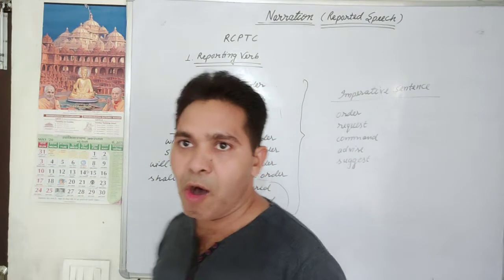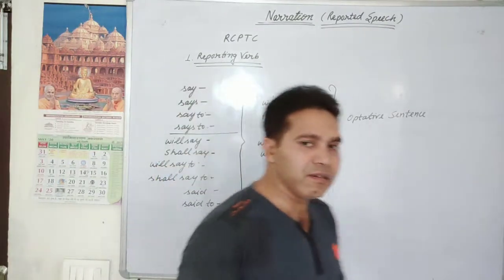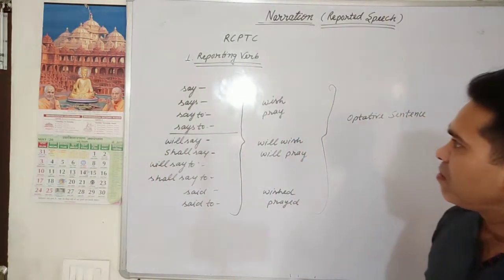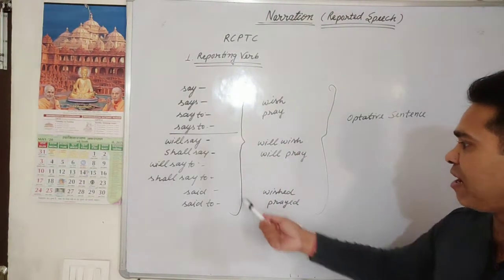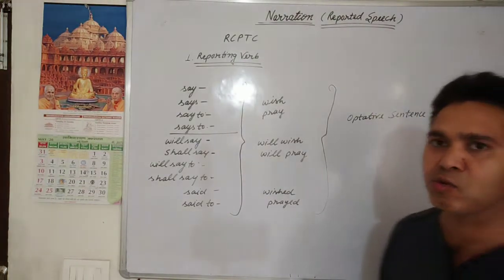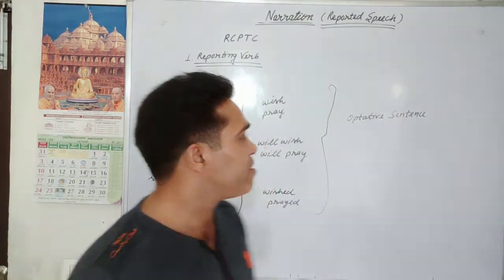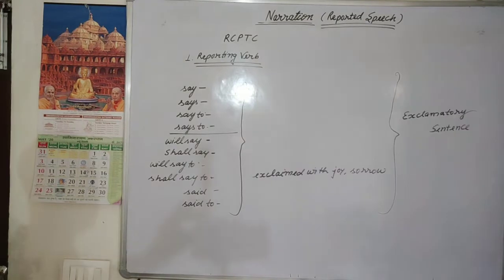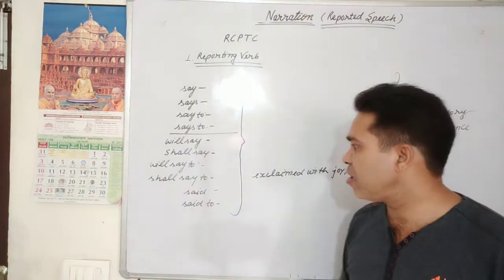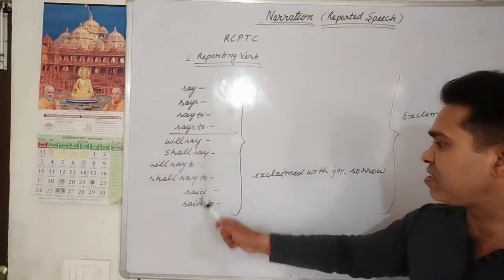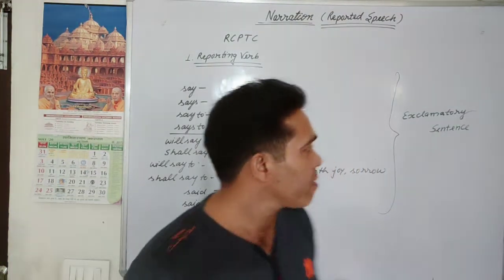If the sentence is optative, we change the reporting verb to 'wish' or 'pray', 'will wish', or 'will pray'. In past tense, 'wished' or 'prayed'. These are mostly used for optative sentences. If the sentence is exclamatory, mostly in past tense, in place of 'said' or 'said to' we use 'exclaimed with joy', 'sorrow', etc.